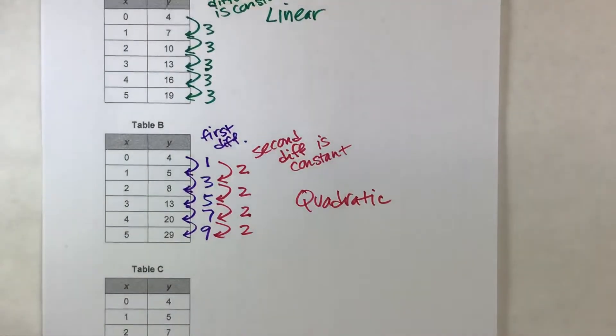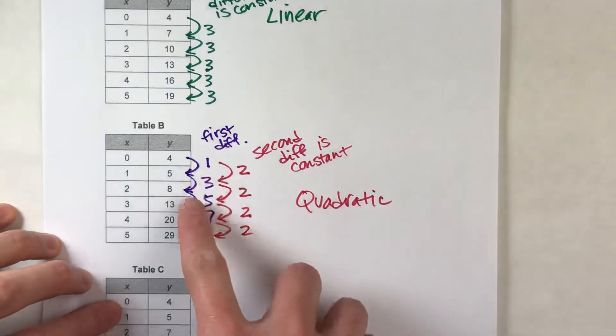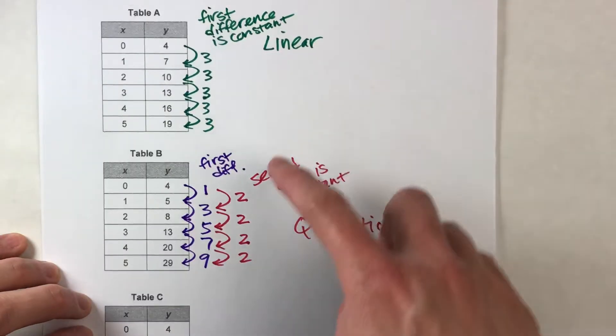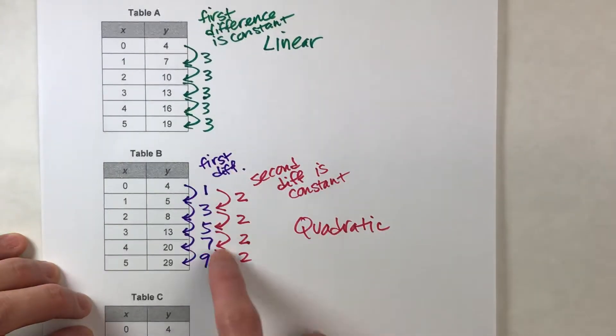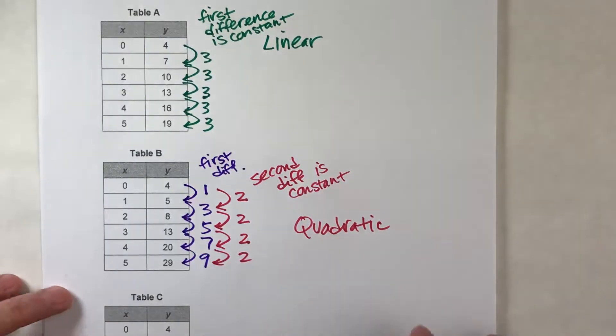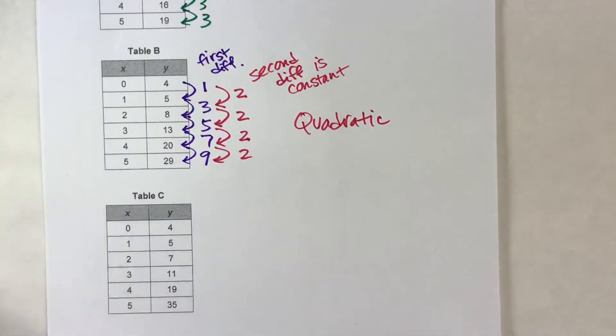Anytime you have a table where the second difference is constant, it is a quadratic function. So we can easily check to see if it's linear or quadratic by looking at the first difference or the second difference. If the first difference is constant, it's linear. If the first difference isn't constant, but the second difference is, it's quadratic. Let's see one more example here.